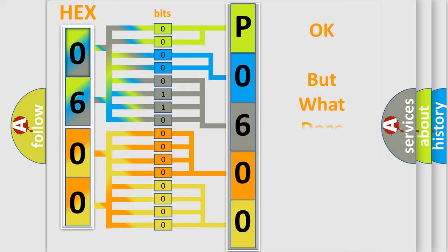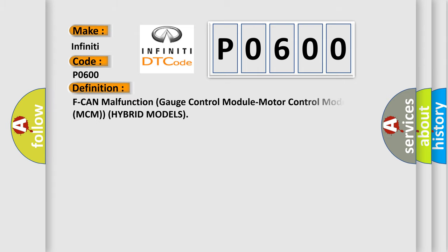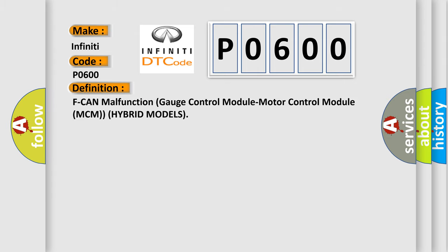We now know in what way the diagnostic tool translates the received information into a more comprehensible format. The number itself does not make sense to us if we cannot assign information about what it actually expresses. So, what does the diagnostic trouble code P0600 interpret specifically? Infiniti car manufacturer. The basic definition is: F CAN malfunction gauge control module motor control module MCM hybrid models.